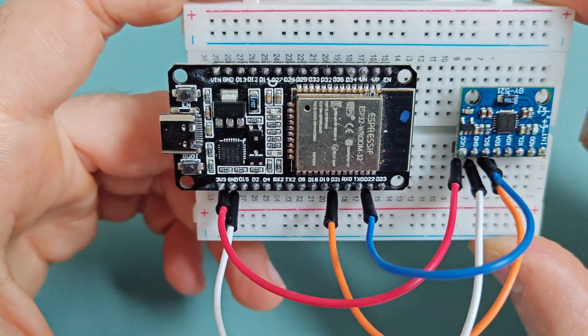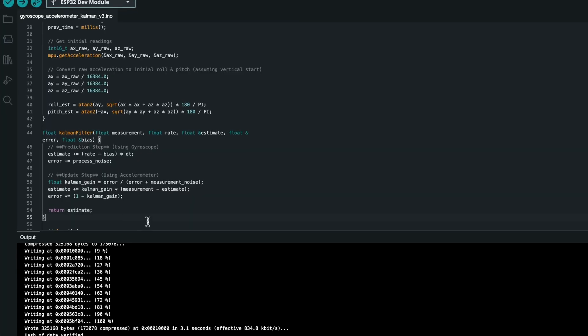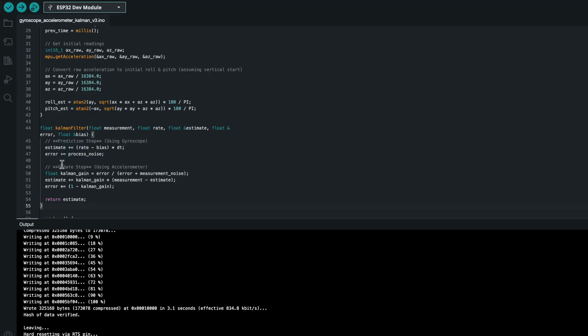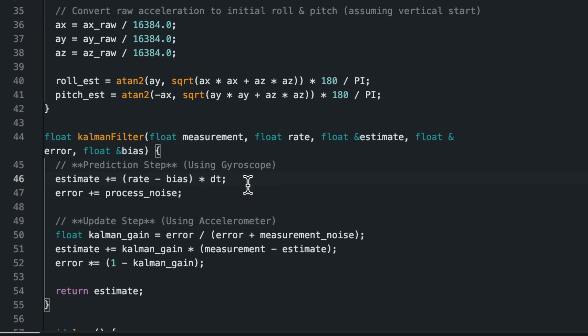Now, let's implement this in our ESP32 and MPU6050 setup. The accelerometer gives us an initial angle estimate using the arctangent function, while the gyroscope provides angular velocity, which we integrate over time to track changes.